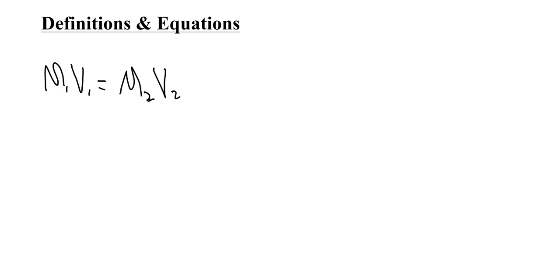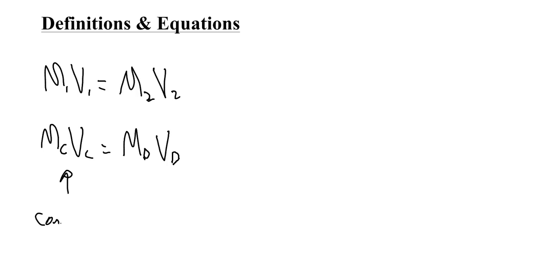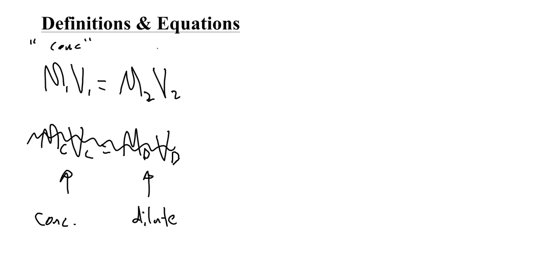You'll sometimes see the equation written as McVc = MdVd, where C stands for concentrated and D stands for diluted. That's okay, but I recommend sticking with M₁V₁ = M₂V₂ because we'll use that same equation for titration later in the year. Just remember that the '1' side is concentrated and the '2' side is diluted.